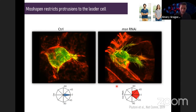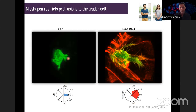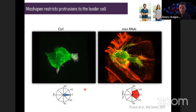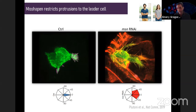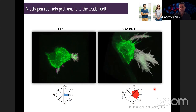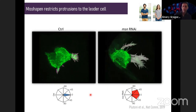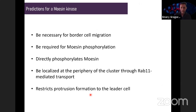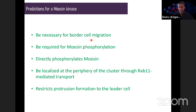So misshapen really looks like the kinase we were looking for: it's necessary for border cell migration, required for moesin phosphorylation, can directly phosphorylate moesin, localizes at the periphery of the cluster, and restricts protrusion formation. However, we had some unexpected findings compared to what we knew from Rab11 and moesin. In the misshapen RNAi condition, we see very long and stable protrusions that usually don't disappear for quite a long time, and also an unexpected detachment effect. We quantified: multiple protrusions, 50% of clusters failing to detach, and long stable protrusions.